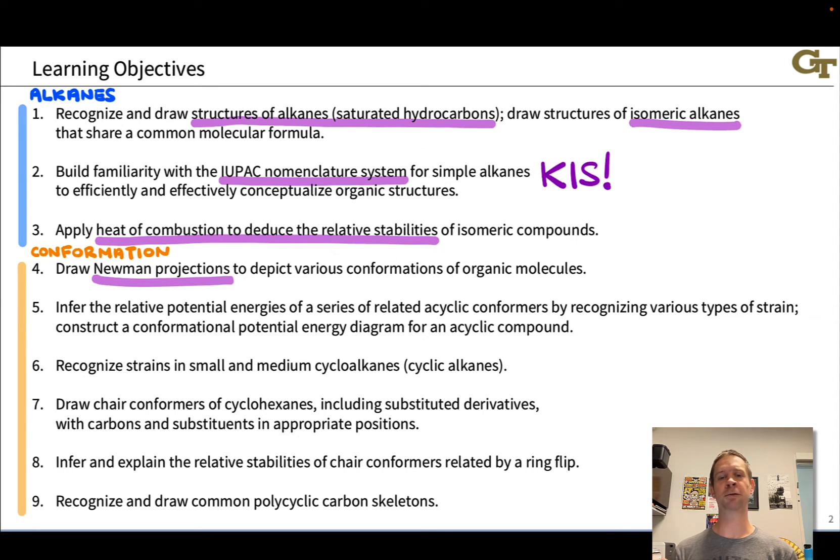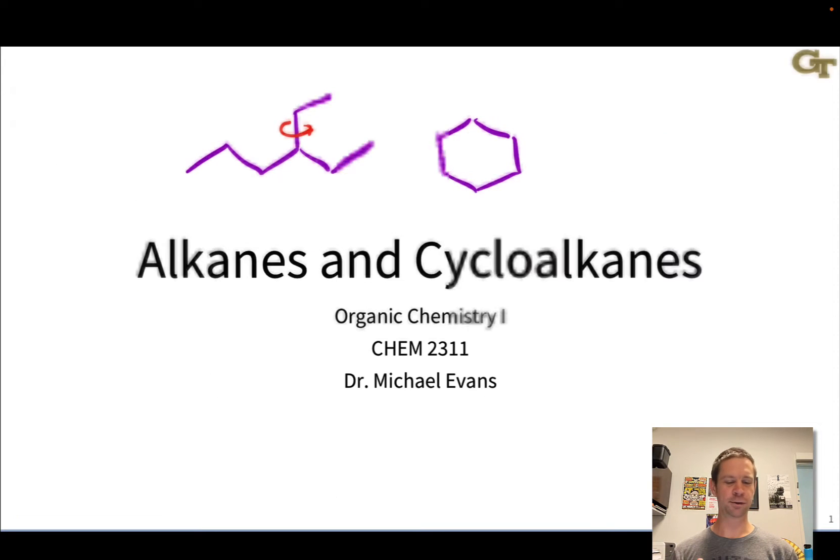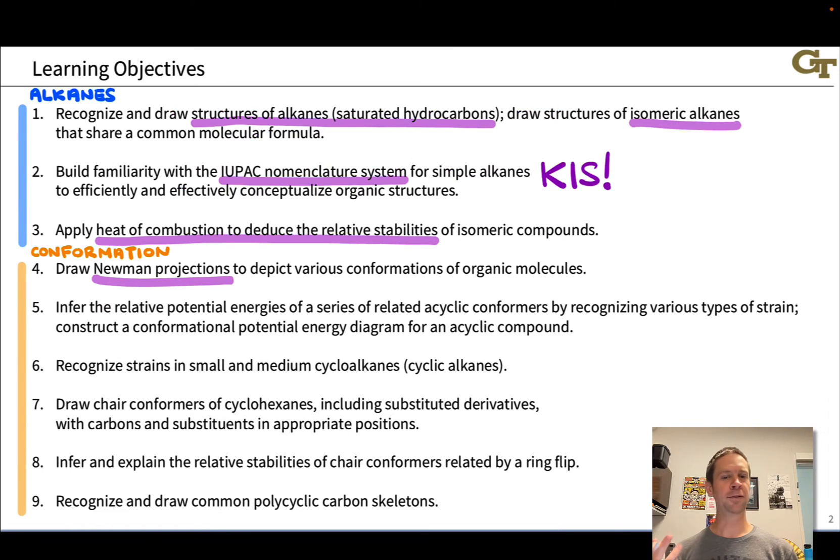And then we're going to talk a little bit about the relative stabilities of alkanes. And again, there's not much going on here if you think about it from the perspective of the stability factors, right? It's all just carbon-carbon and carbon-hydrogen bonds. But nonetheless, we can use heats of combustion as a measure of stability and look at, for example, the difference in stability between linear and branched alkanes.